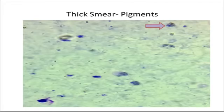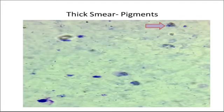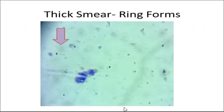In this slide, you can see a brownish pigment — that is the malarial pigment, also known as hemozoin. It is a pigment produced due to the destruction and digestion of RBC products by the malarial parasite. We also see ring forms, identified by the chromatin dot.